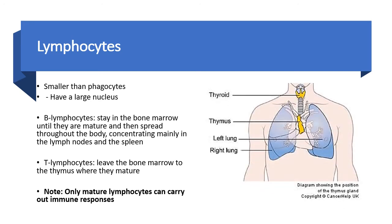When I ask students where the thymus is, they erroneously refer to the thyroid. This image from Cancer Help UK helps you visualize where the thymus is. The thyroid is somewhere in your throat, while the thymus is closer to your respiratory organs. The thymus and the thyroid are two different organs within the body, so please do not confuse them.